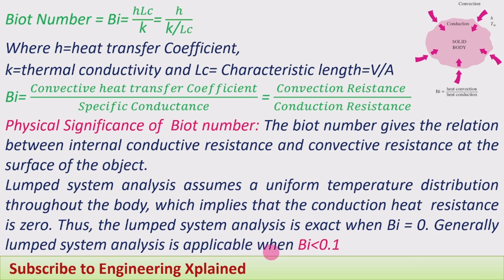Generally, lumped system analysis is applicable when the Biot number is less than 0.1. The Biot number is used to decide whether lumped system analysis is applicable, or whether we need to use the transient temperature charts for analyzing transient heat transfer. If the Biot number is less than 0.1, we use the lumped system analysis. If the Biot number is more than 0.1, we use the transient temperature charts — also called Heisler charts — which I will discuss in the next session.